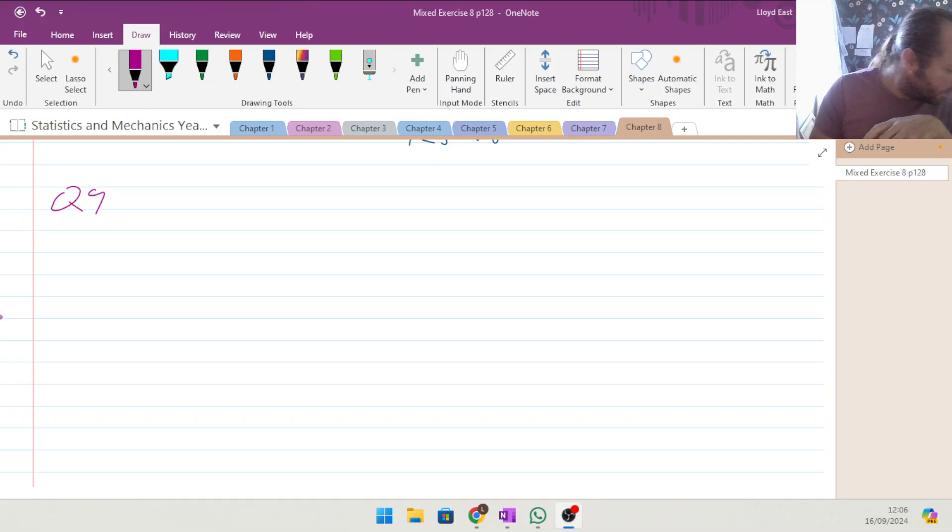Okay, so here we are. Final question of statistics and mechanics year one, chapter eight, mixed exercise, question nine. A plane flies P to Q, then Q to R. Displacement of P to Q and Q to R are these different vectors, and they've given us a diagram.